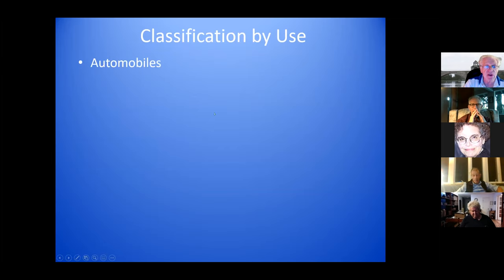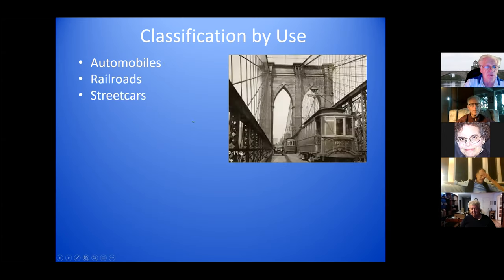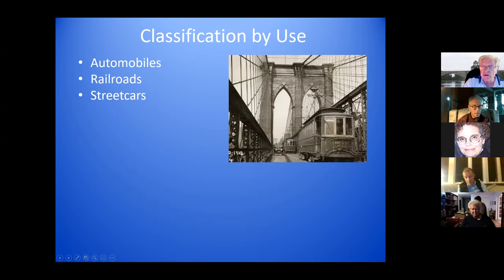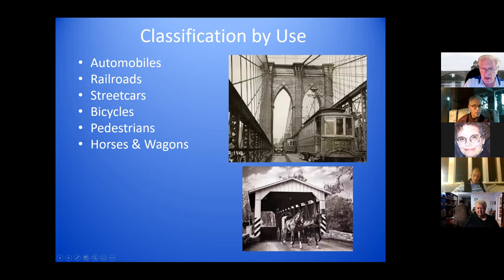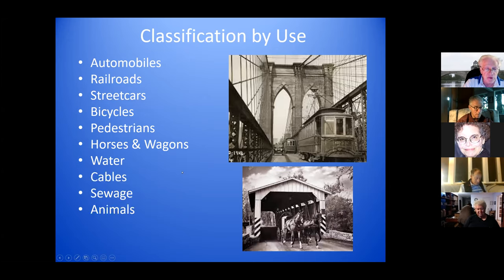Classification by use includes automobiles, including trucks and buses, railroads, and streetcars. Here's a picture of Manhattan Bridge in New York City, from Brooklyn to Queens, with streetcars going over the bridge and a regular car having to avoid them. It could be a bicycle bridge, a pedestrian bridge, for horses and wagons — a lot of the covered bridges that were built were for that purpose. Sometimes water lines go over bridges, cables, sewage can go over a bridge, and there are bridges just for animals, not for people. And again, overpasses are bridges.